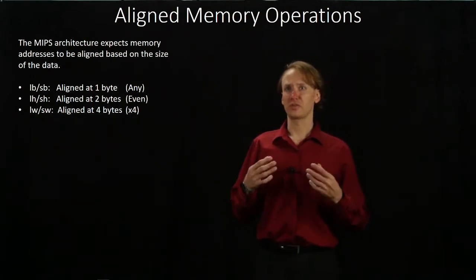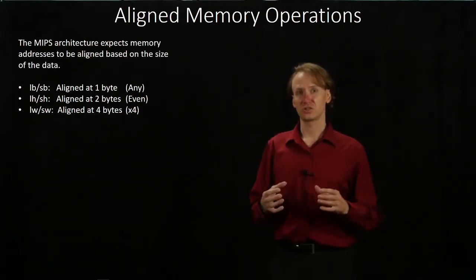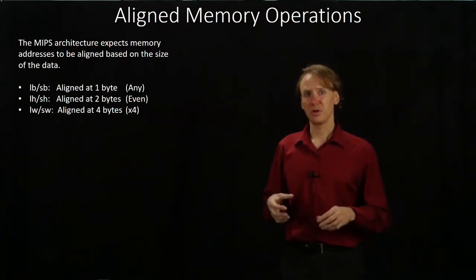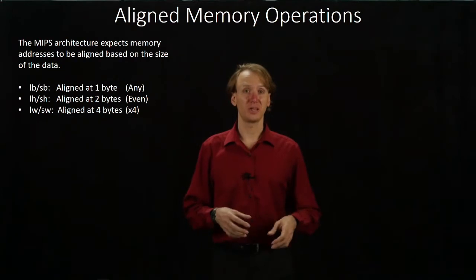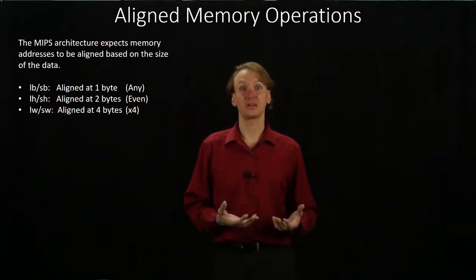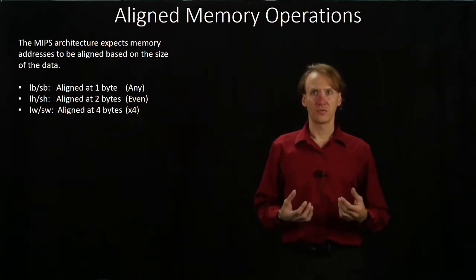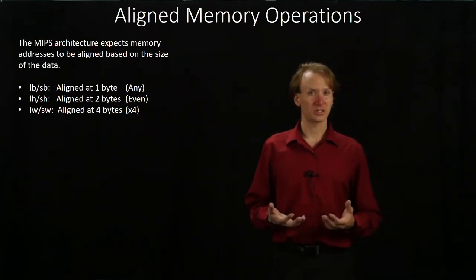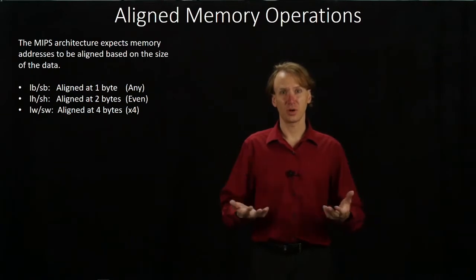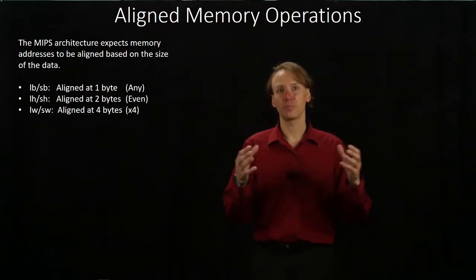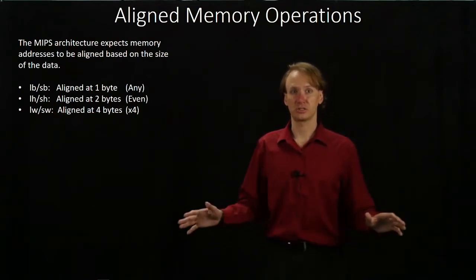So we have three different types of operations, each of which can work with a different size chunk of memory. However, the MIPS architecture expects that the addresses these instructions get will be aligned based on the size of the data they're working with. For load byte and store byte instructions, that's not terribly important because they're just one byte — we can access any one byte in our architecture just fine, and the MIPS architecture doesn't care.